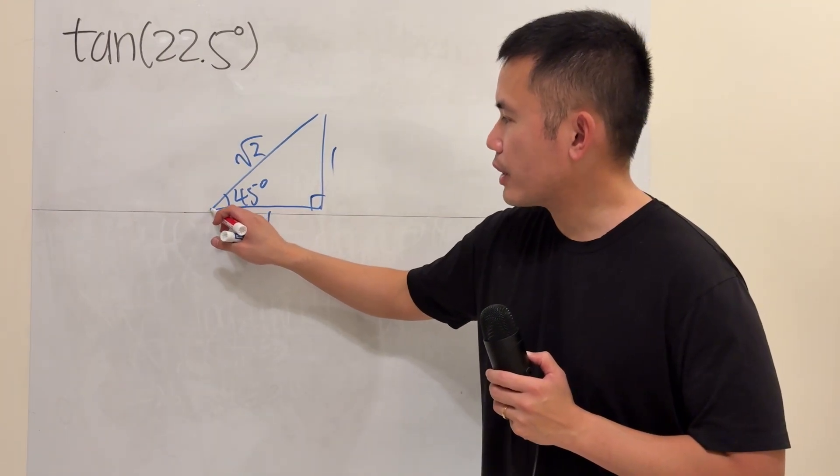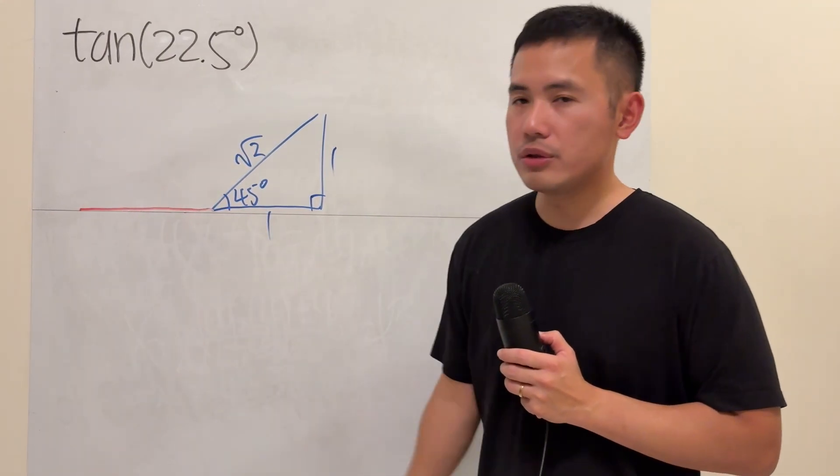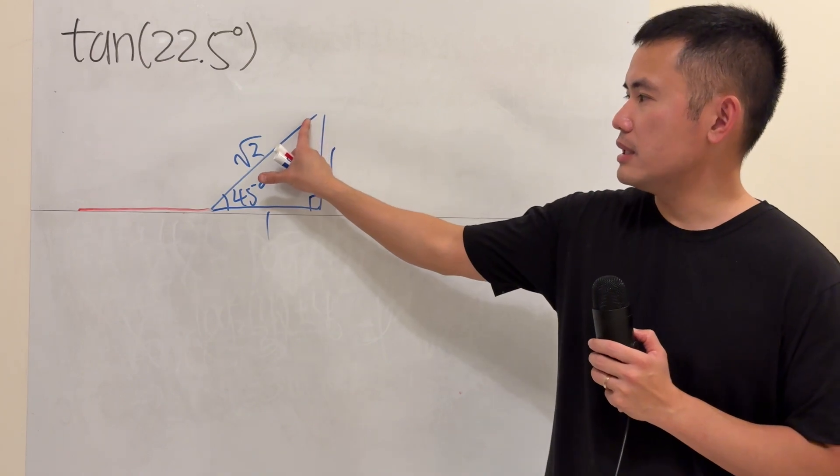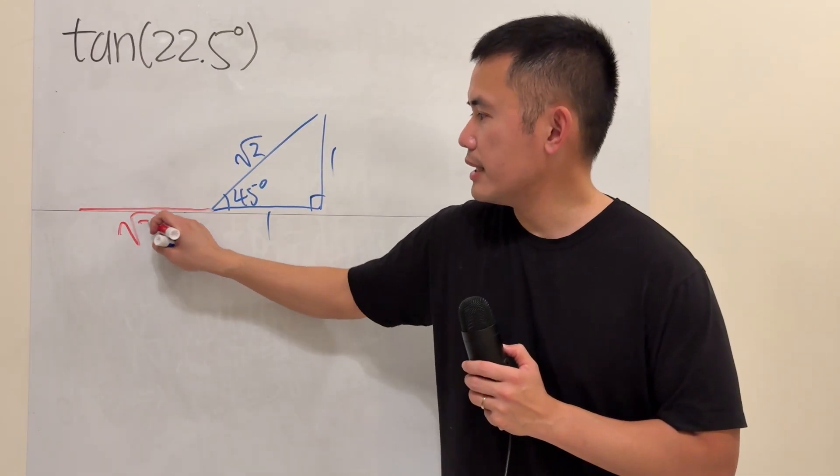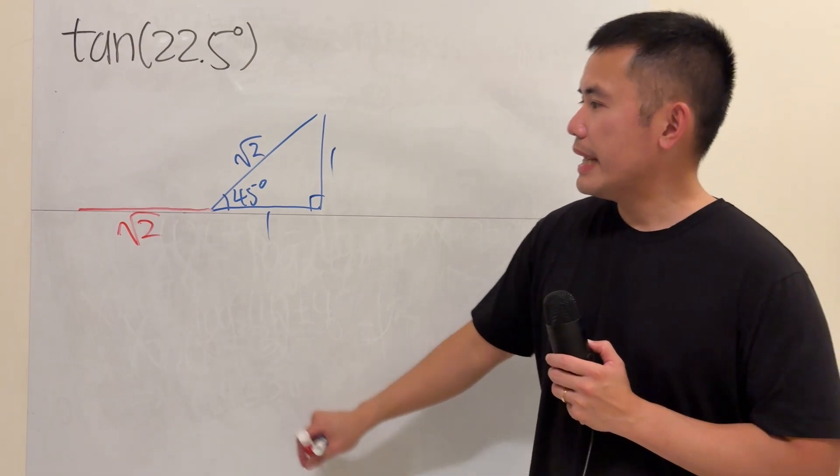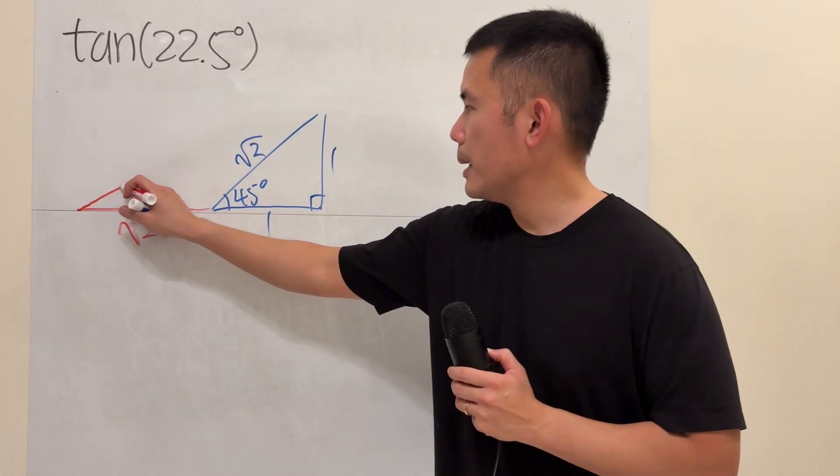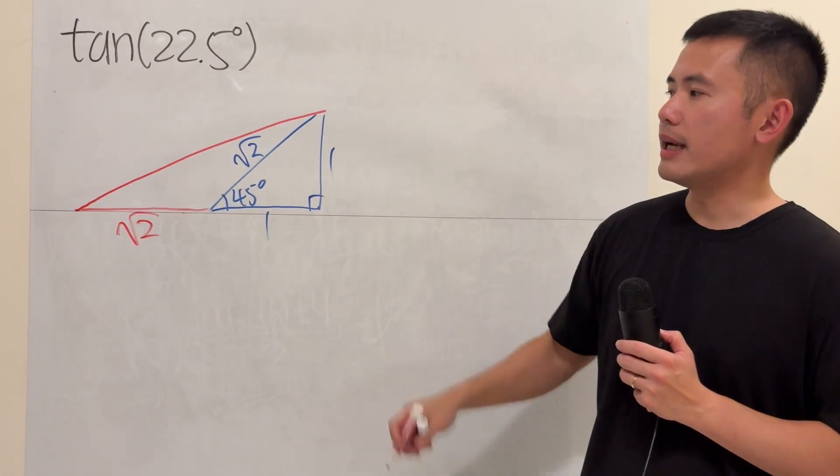Go ahead and extend this right here. But how much, though? As much as this. So just think about this, rotate it, and you still get square root of 2, like so. And then construct a bigger triangle, like this.